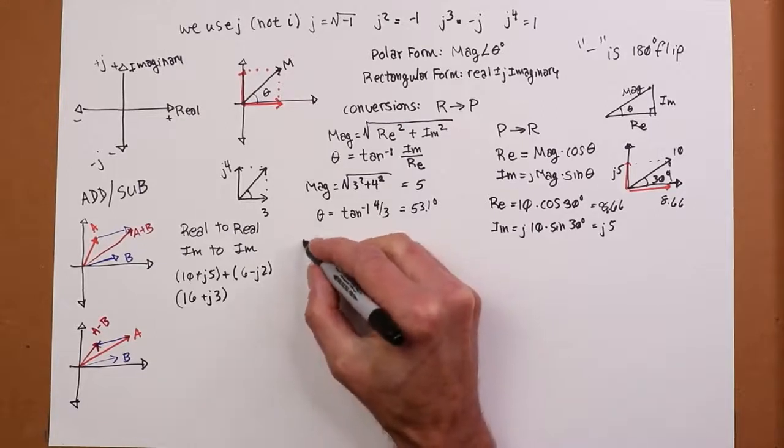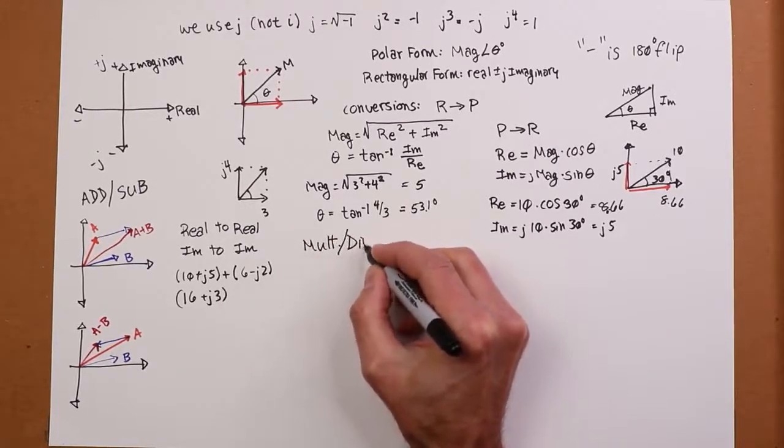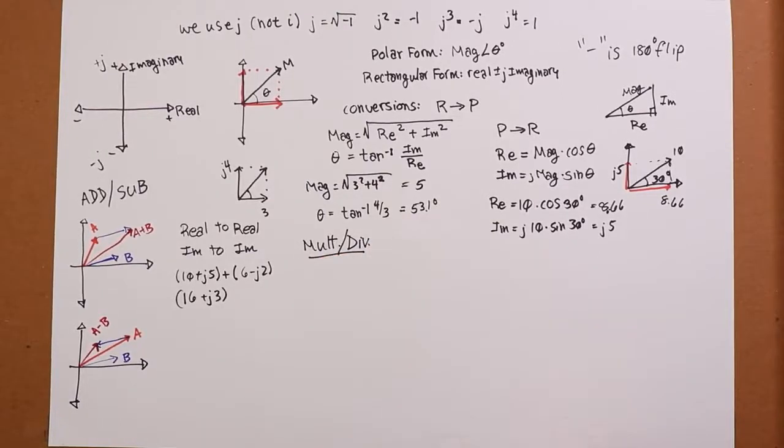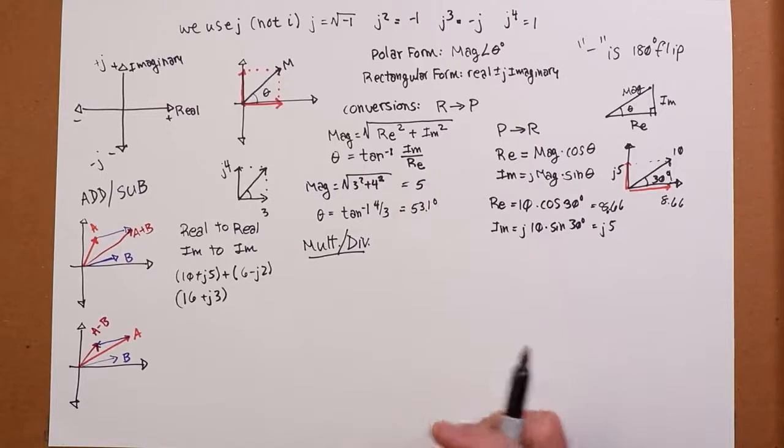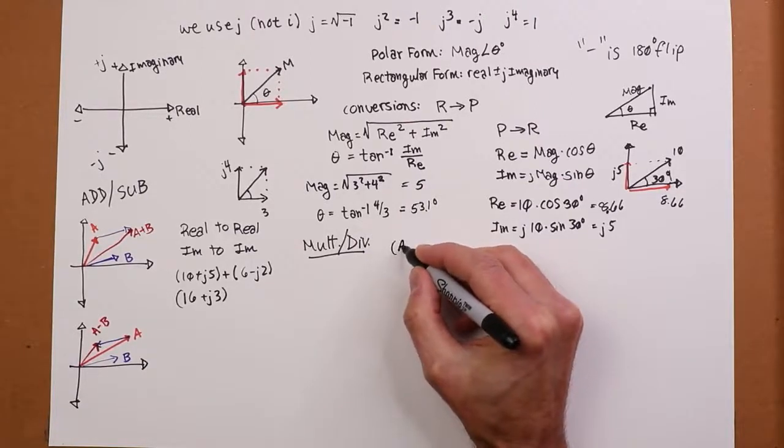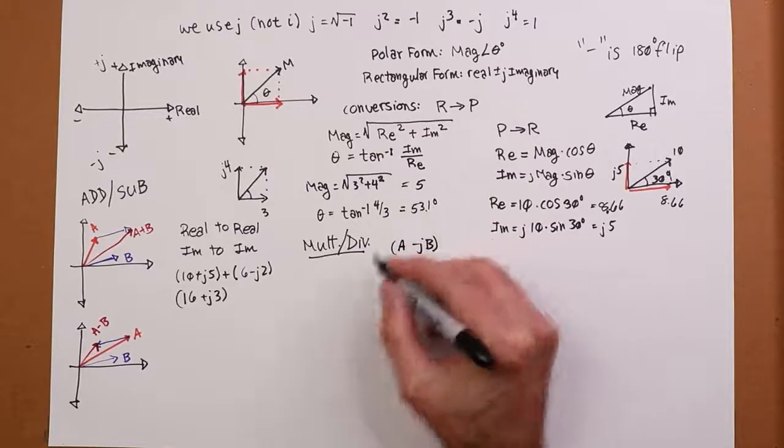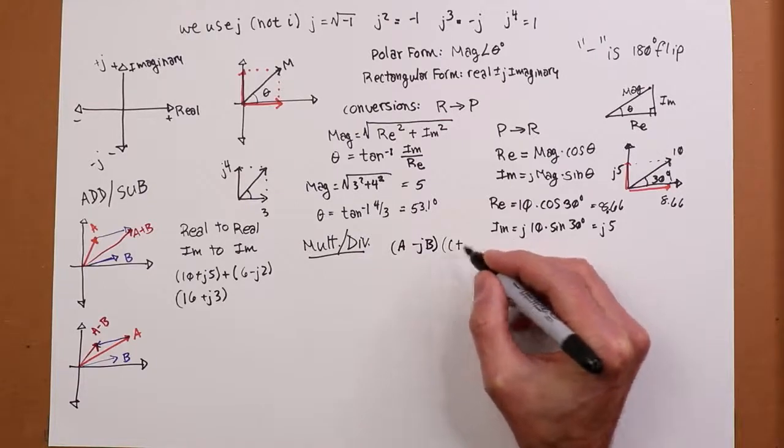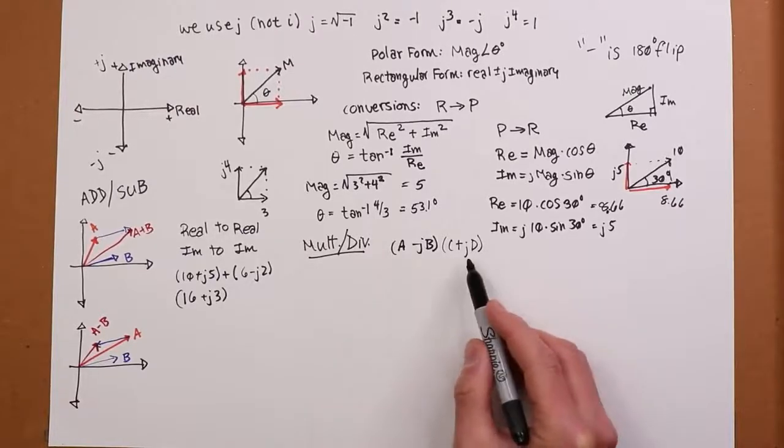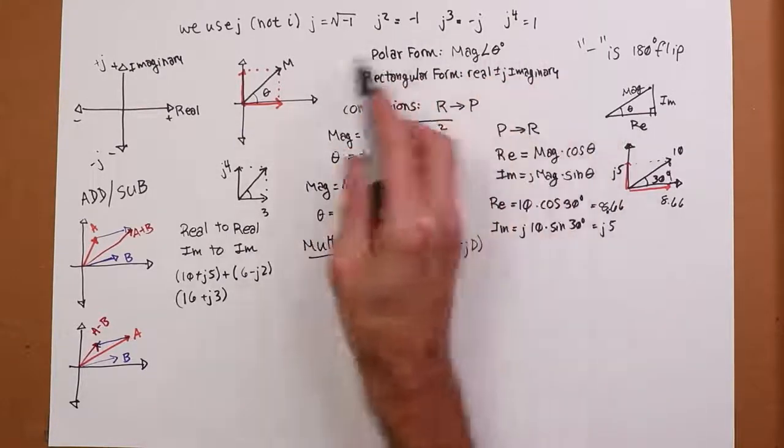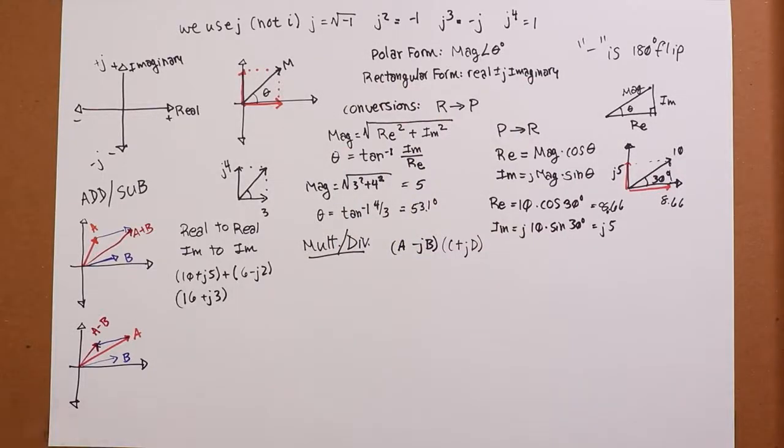Now, what about multiplies and divides? Well, in this case, it turns out to be very convenient to do this in polar form. Now, you could do a foil. If you had something like A minus JB, you had some rectangulars, and then you did C plus JD, you could do the foil - first, outer, inner, last. You could say that's A times C, A times the JD, minus JB times C, minus JB times JD, in which case you're probably going to have to use some of these identities up here. And then you'd have a value that's ultimately in rectangular form.